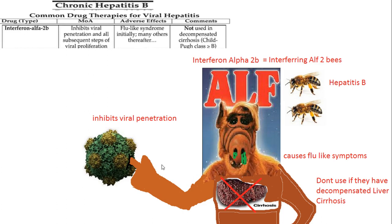This is interferon alpha-2b. Only people from the 80s would remember ALF, but ALF would always speak up and interfere with people — so here's interfering ALF. He's got two B's to help remember '2b,' and the B also reminds you it's hepatitis B. It inhibits viral penetration, shown as ALF's finger penetrating a virus. Adverse effects include flu-like syndromes — represented by nasty boogers coming out of his nose. It is not to be used in decompensated cirrhosis, shown with a big X through a cirrhosis diagram.